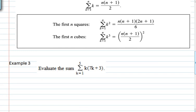So in example 3 we're asked to evaluate this sum. Well first of all I know that I can distribute this k across here and that's going to give me the sum k equals 1 to 5 of 7k squared plus 3k. And based on the rules that we just saw we saw that the sums distribute across addition.